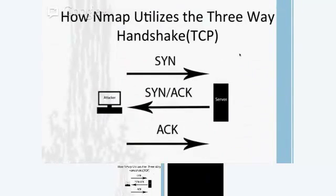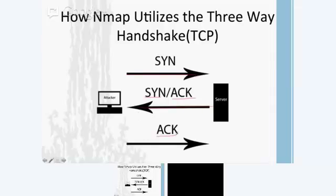NMAP is a scanning tool and it utilizes the TCP three-way handshake, which is the way two computers establish a connection and transfer data. There are three parts: the SYN, the SYN-ACK, and the ACK. The SYN says 'I want to connect to you.' The server responds with a SYN-ACK saying 'I acknowledge and I also want to connect.' Then the client sends the ACK. NMAP utilizes this connection to perform multiple things, including firewall evasion techniques and scanning individual ports on a network.